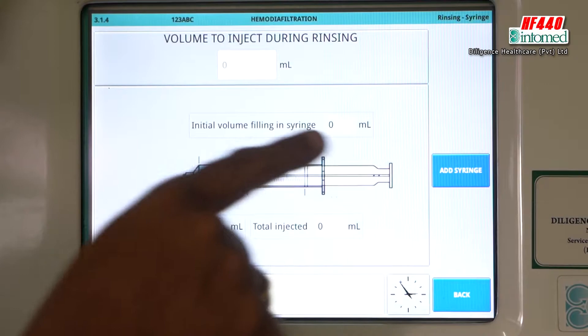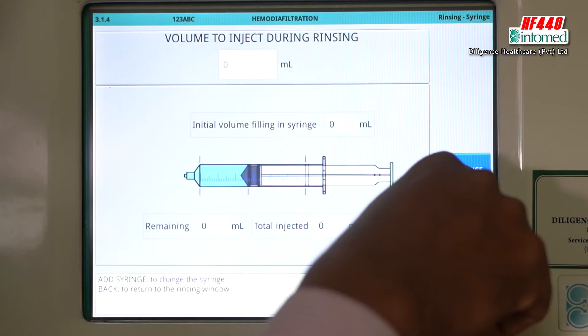Then you can understand, you can locate that particular tube very easily. Then you have to go to the syringe pump, then add syringe.